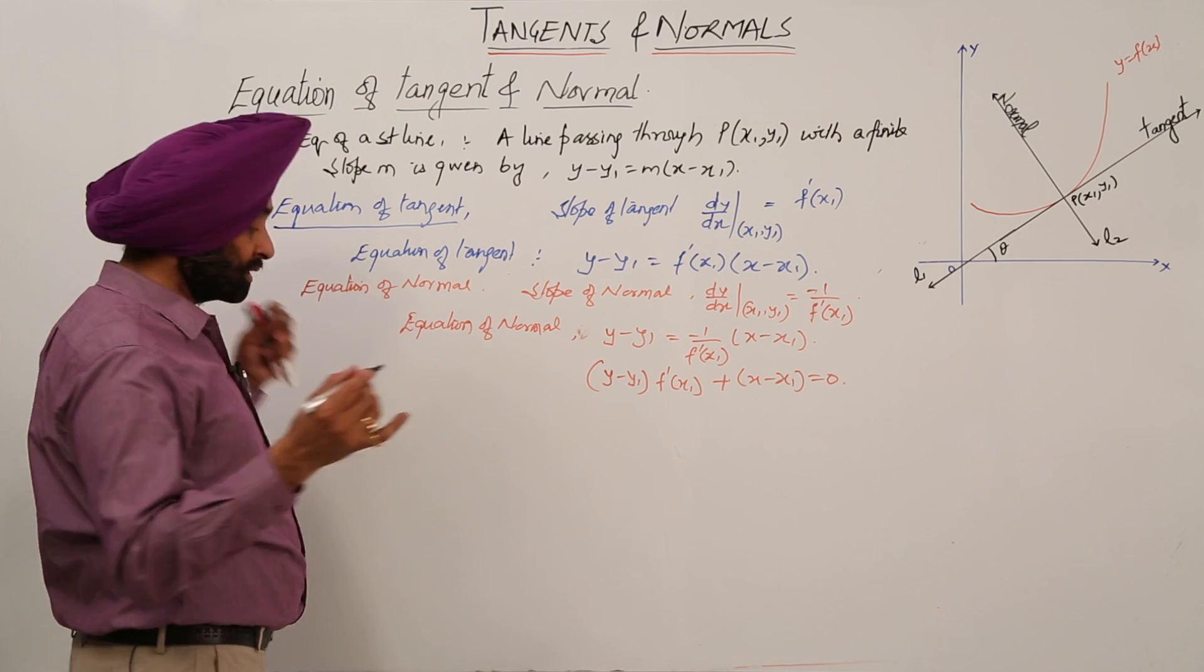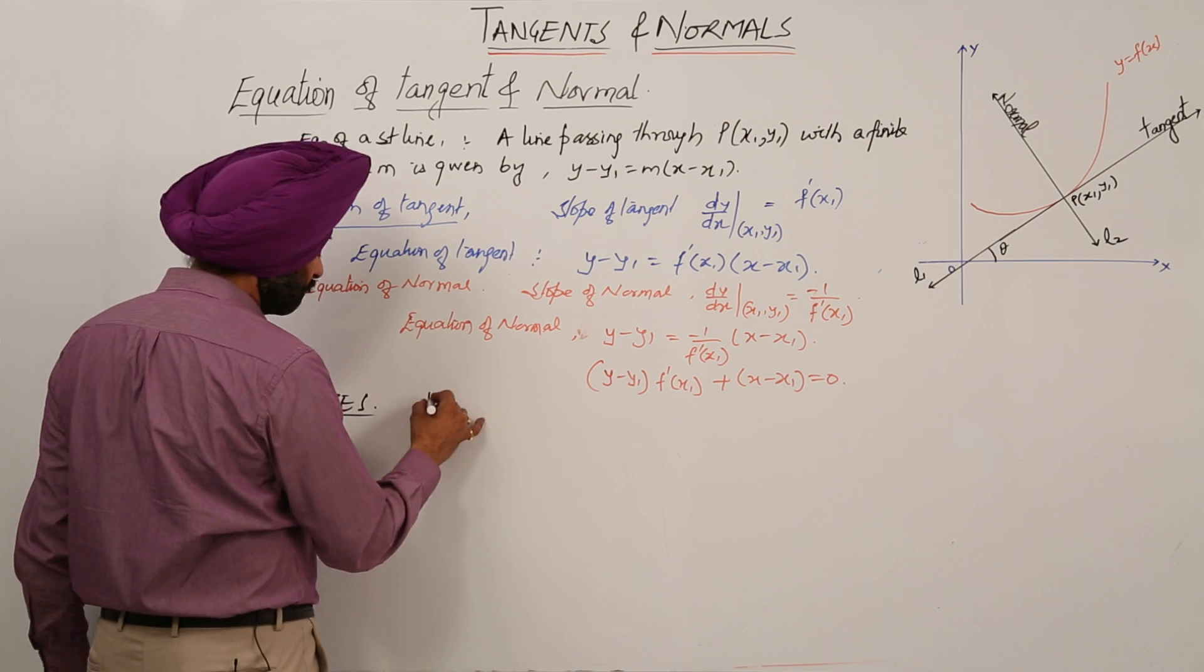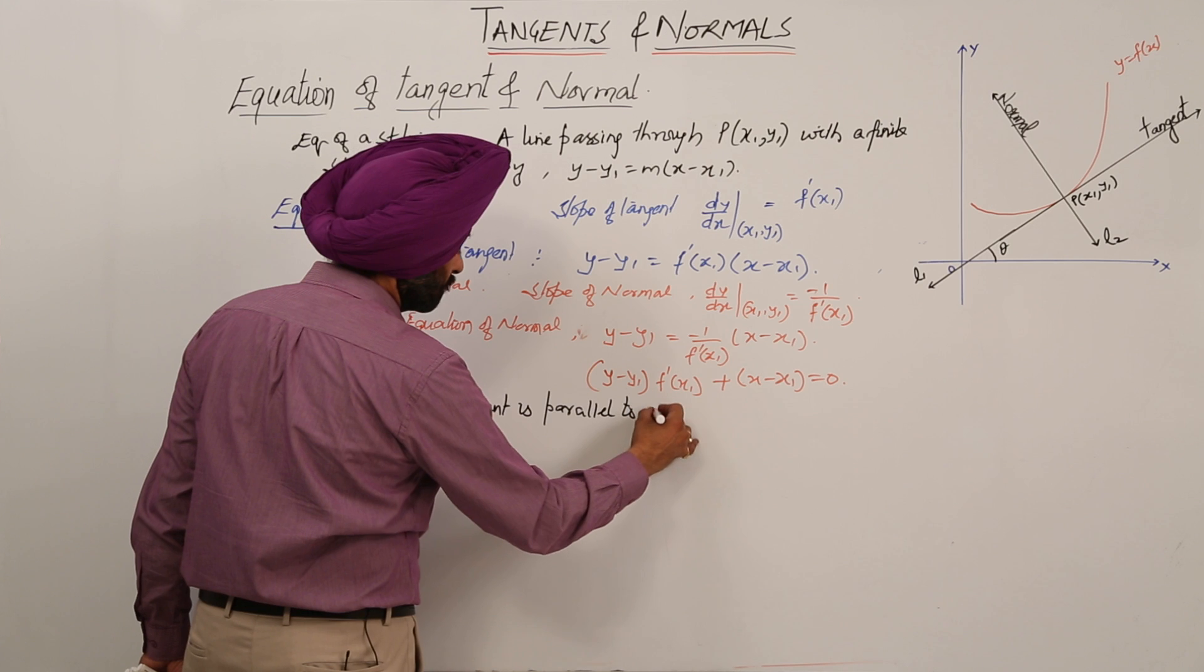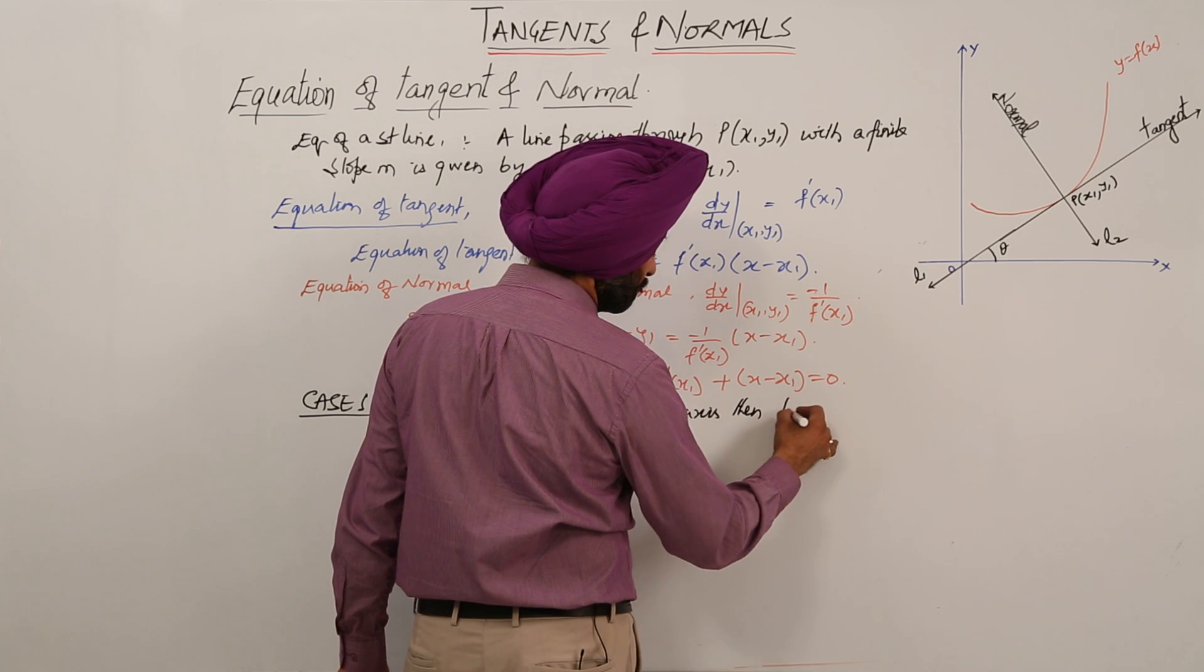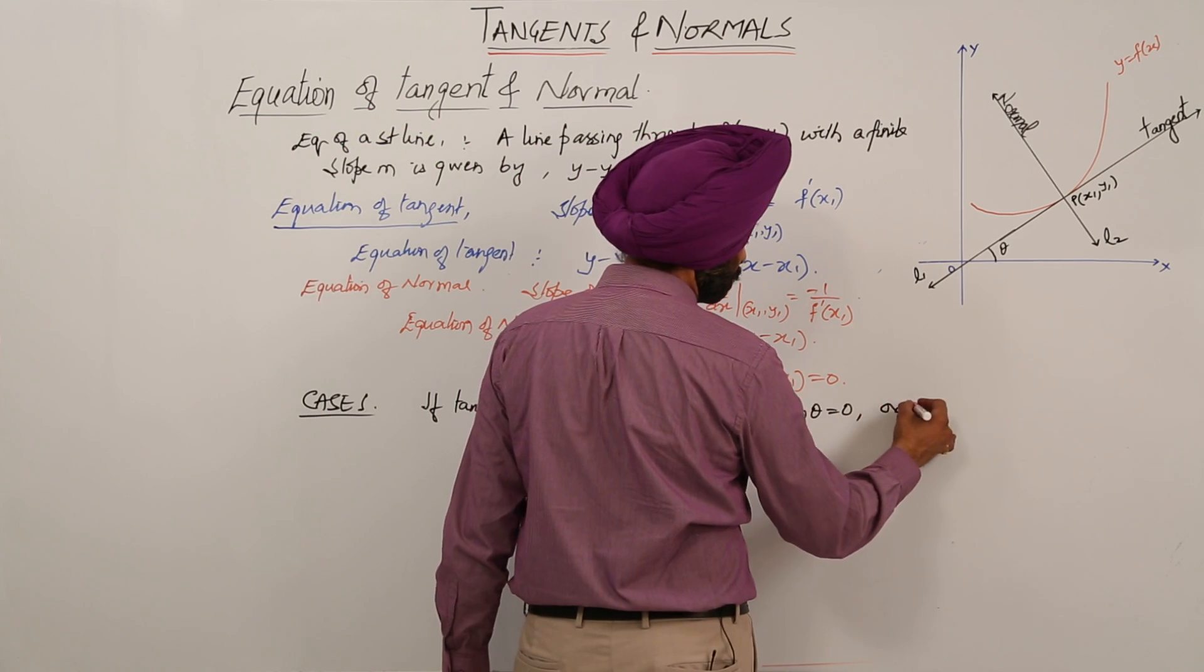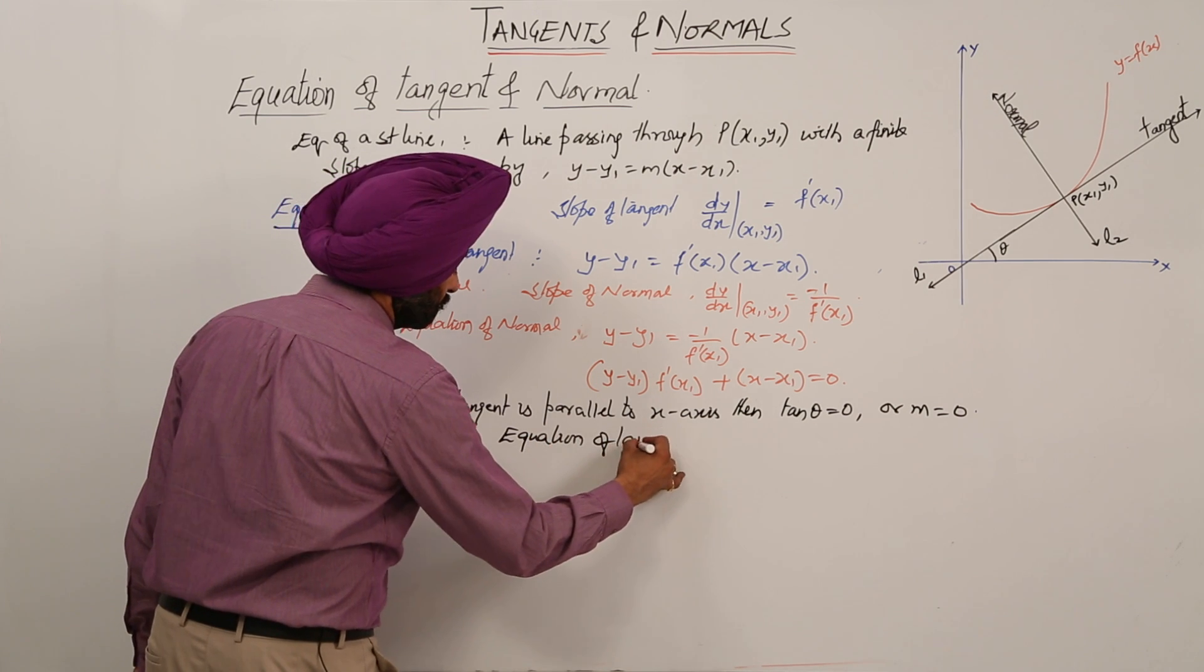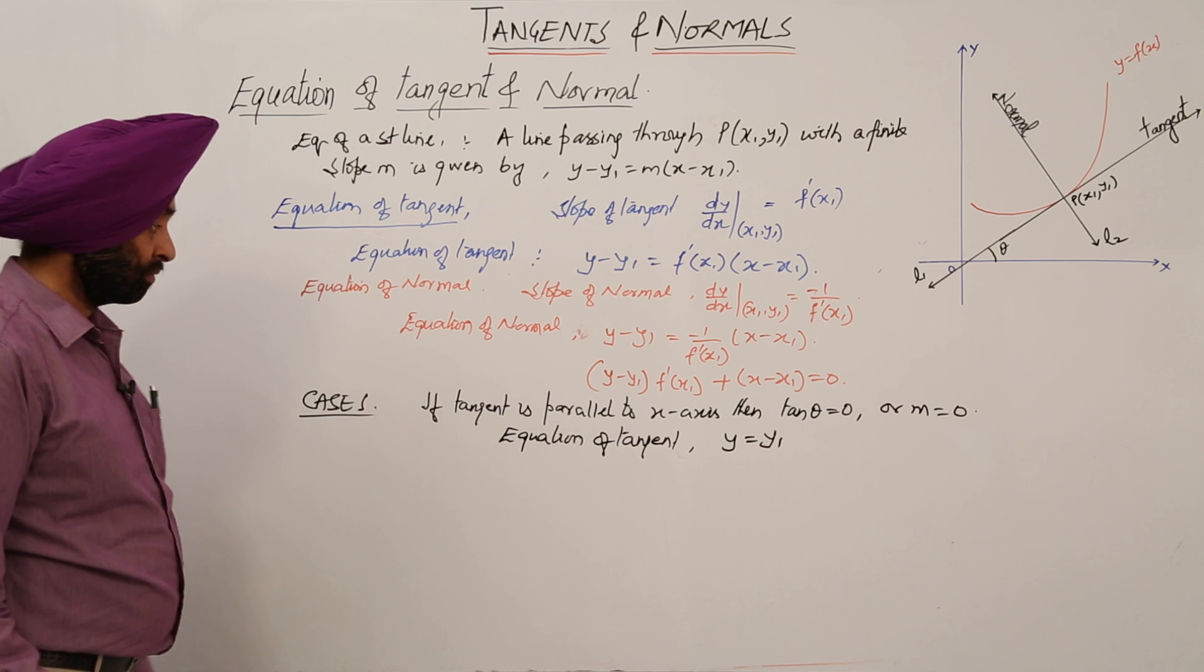Now we have two cases. Case 1: if tangent is parallel to X-axis, then tan theta equals zero or M equals zero. Then the equation of tangent is Y equals Y1.